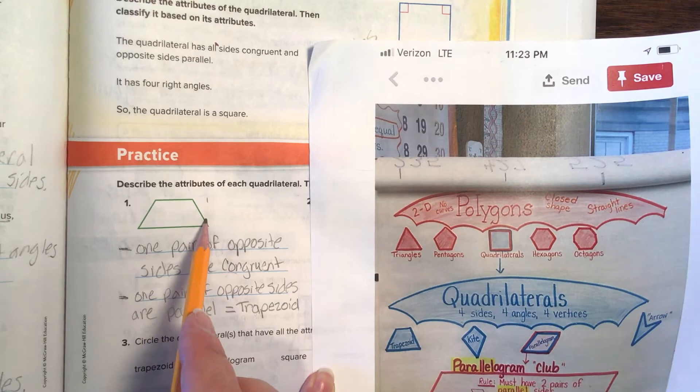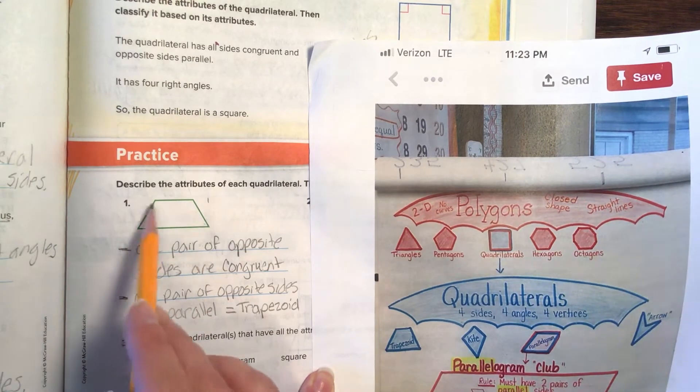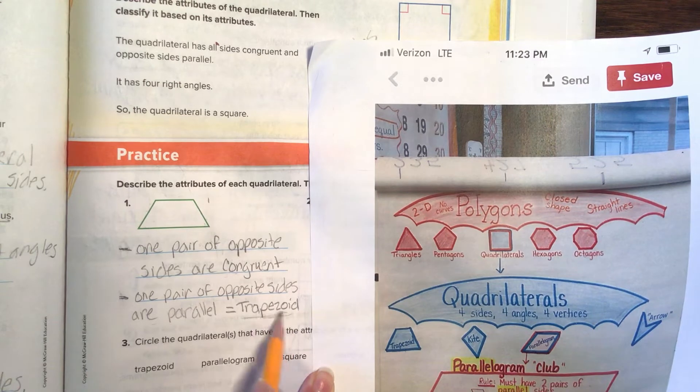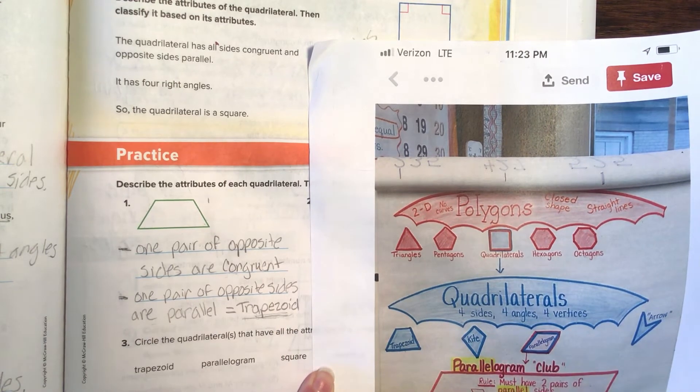These ones are congruent, and these ones are parallel, which means these are the same length, and these are parallel. So that means this crazy little shape is a trapezoid. Push pause if you need to to get all that information.